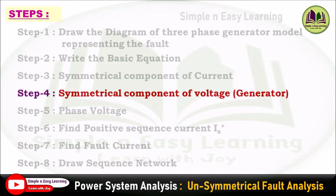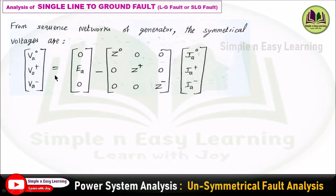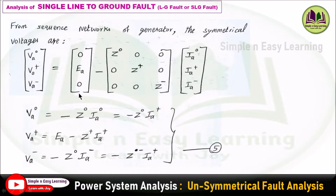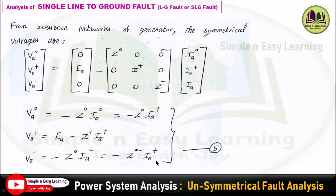Step 4 — consider the symmetrical components of voltage from the sequence network of the generator. From the sequence network, va0, va+, and va− are expressed using the induced EMF and impedance matrix. Only the positive sequence value is present in the induced EMF path, since under balanced conditions negative and zero sequence components are zero. Expanding: va0 = −z0 × ia+; va+ = ea − z+ × ia+; and va− = −z− × ia+. This is equation 5.